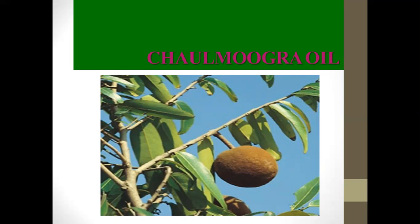This is the biological source of Chaulmoogra oil. Hydnocarpus is a tall tree which grows up to a height of 50 to 60 feet. This tree bears brown velvety spherical fruits — you can see this fruit; it looks like chikku — and asymmetrically gray colored seeds.